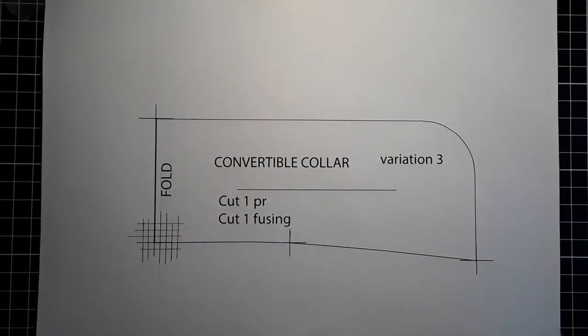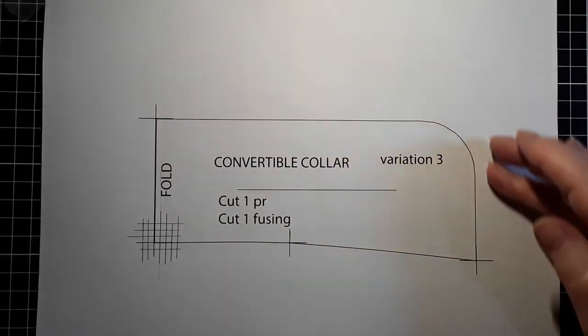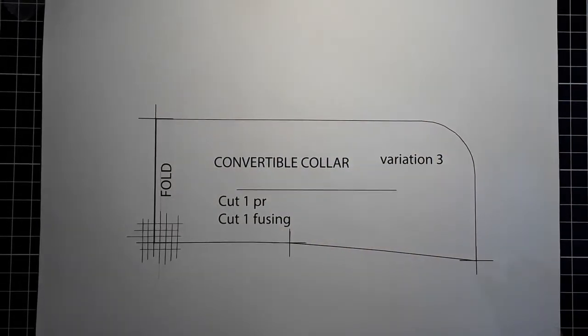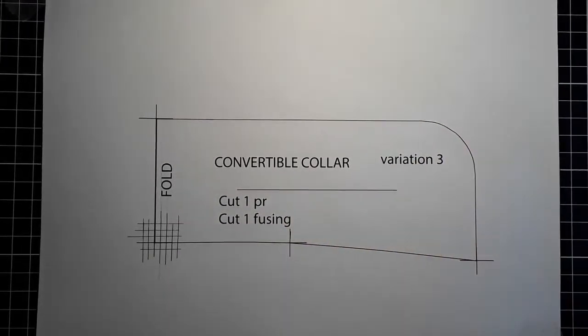Okay, we've got variation three this time on the convertible collar. So we've got a little bit of a curved peak and our collar is going down instead of lifting up at the neck edge.